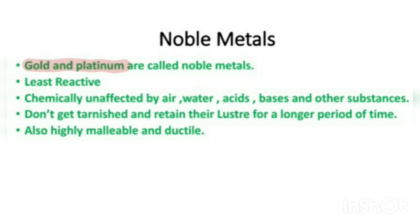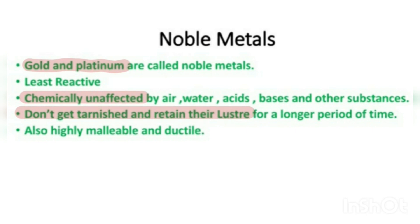Since noble metals are least reactive, they are chemically unaffected by all chemicals — whether it is air, water, acids, bases, or any other substance. Due to this, they do not get tarnished, meaning they do not lose their luster and remain shiny for a longer period of time. Apart from these properties, they are also highly malleable and ductile compared to other metals.